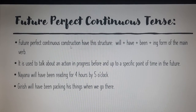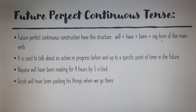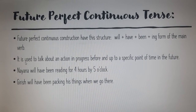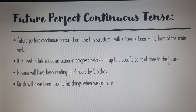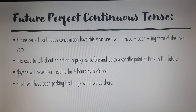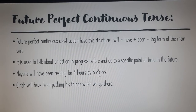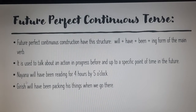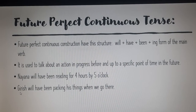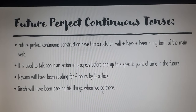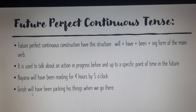The next one is future perfect continuous tense. Its structure is: 'will' plus 'have' plus 'been' plus the '-ing' form of the main verb. It is used to talk about an action in progress before and up to a specific point of time in the future. For example: 'Naina will have been reading for 4 hours by 5 o'clock' — meaning by 5 o'clock she will have been reading for 4 hours continuously. 'Girish will have been packing his things when we go there.'